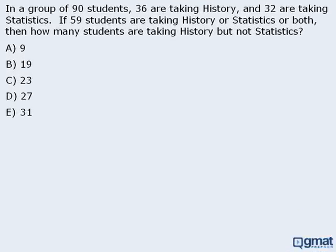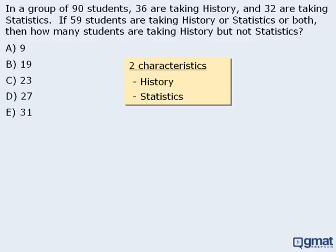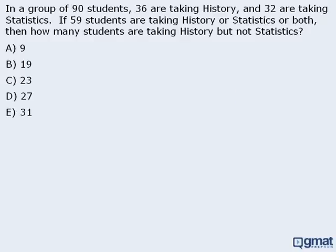In this question we have a population of students, and there are two characteristics associated with each student: they are taking or not taking history, and taking or not taking statistics. As such, we can solve this question using the double matrix method.